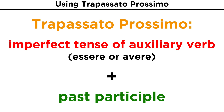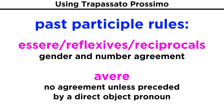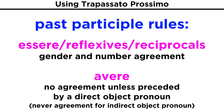All the other rules that you already know about participles still apply. To quickly review, these rules tell us that the past participle will agree in gender and number with intransitive verbs using essere, as well as with reflexive or reciprocals. The past participle will not agree with verbs using avere, unless preceded by a direct object pronoun, and there will never be an agreement with indirect object pronouns.